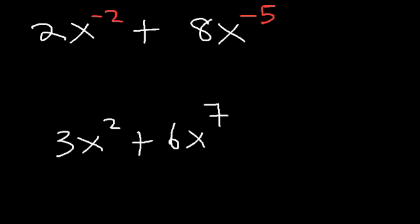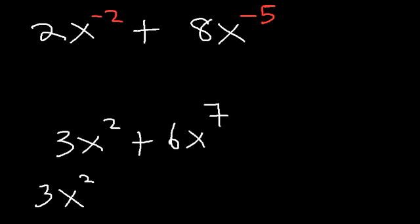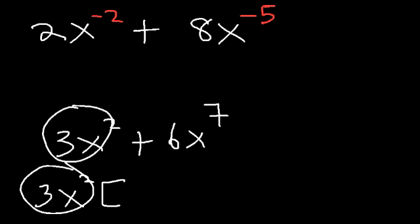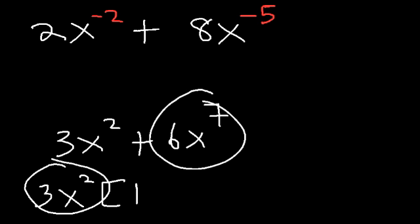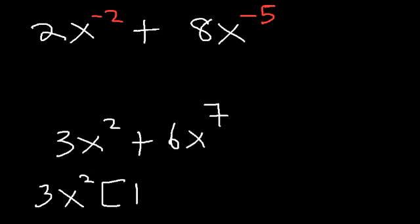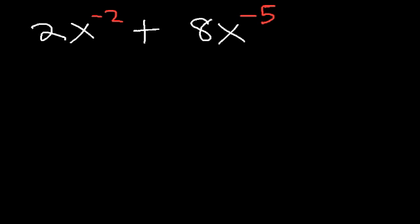The greatest common factor would be 3, and it's x squared — the smaller or lower value of those two exponents. To find what remains: 3x squared divided by 3x squared is 1; 6x to the 7 divided by 3x squared is 2x to the fifth power, since 7 minus 2 is 5. Now how can we apply that same process to factor the expression above?